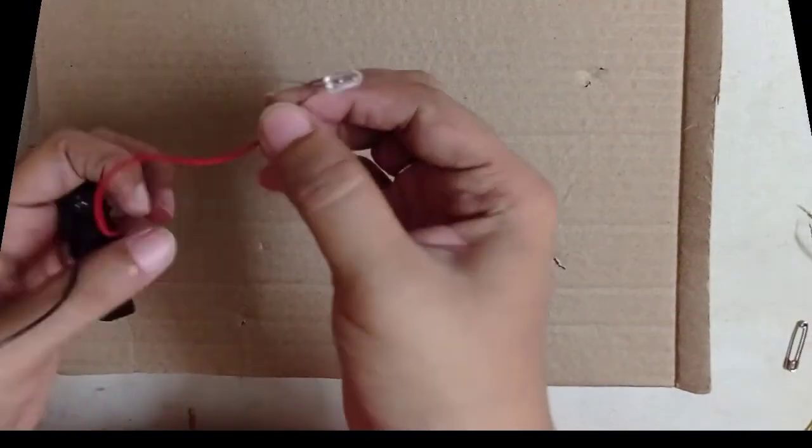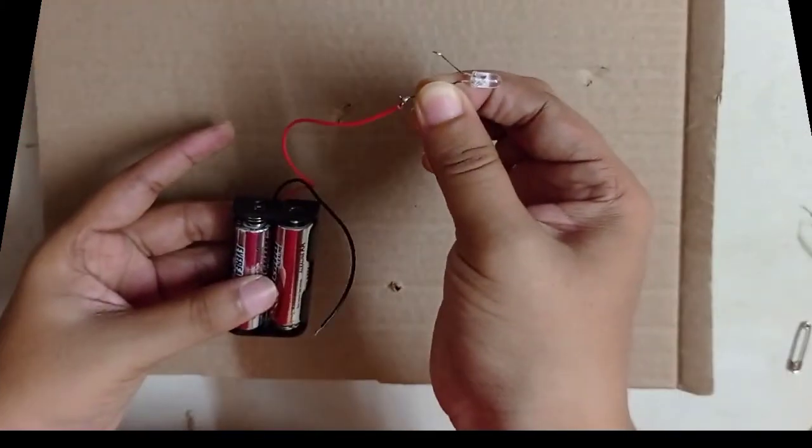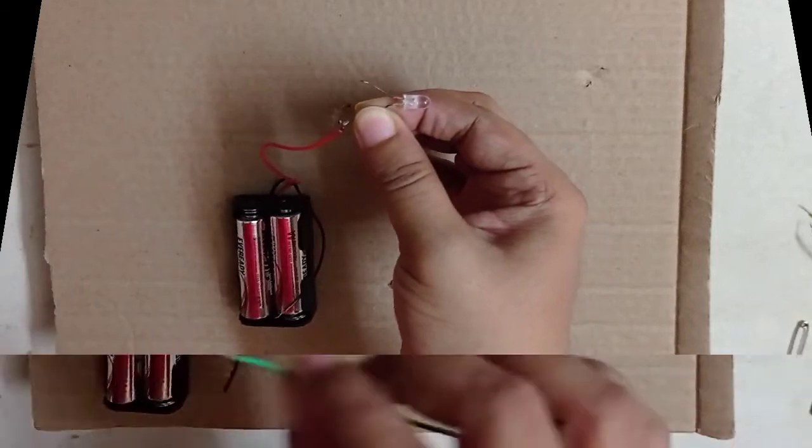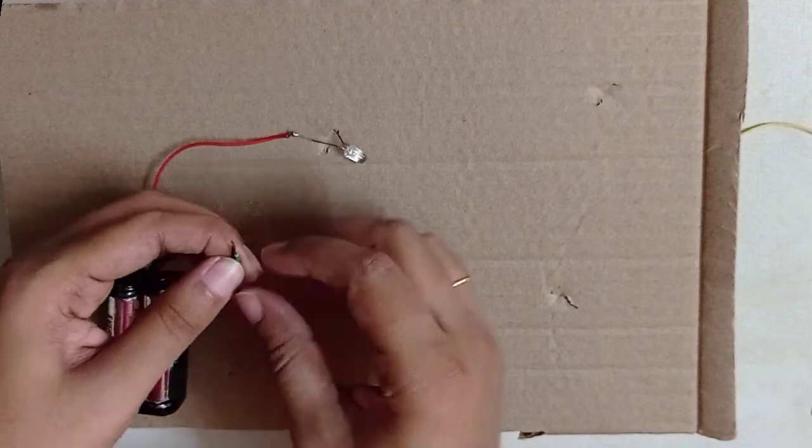Take a LED bulb and connect one terminal to one terminal of the battery holder wire. Connect the other wire with one terminal of the battery.